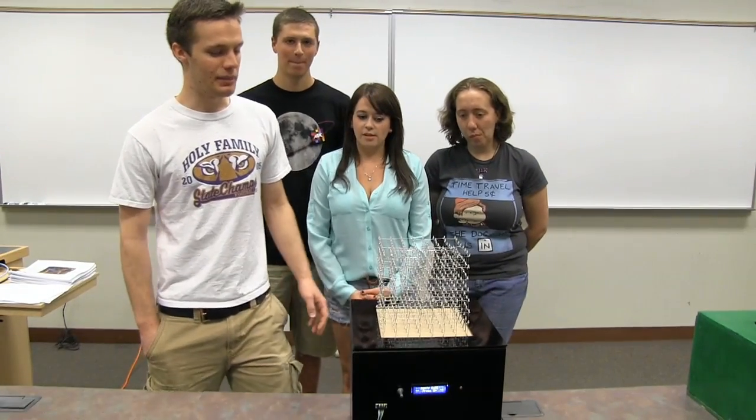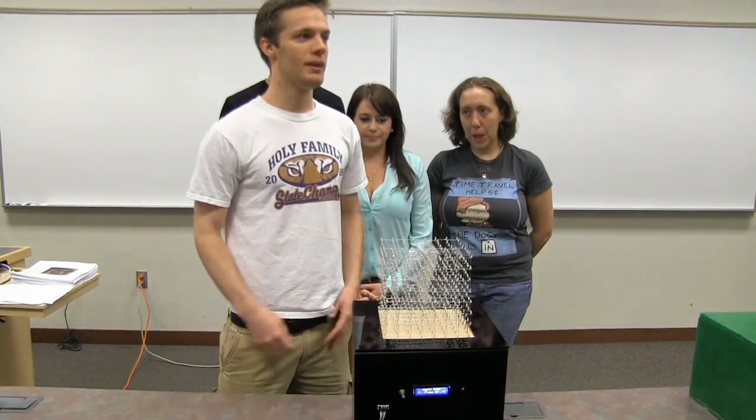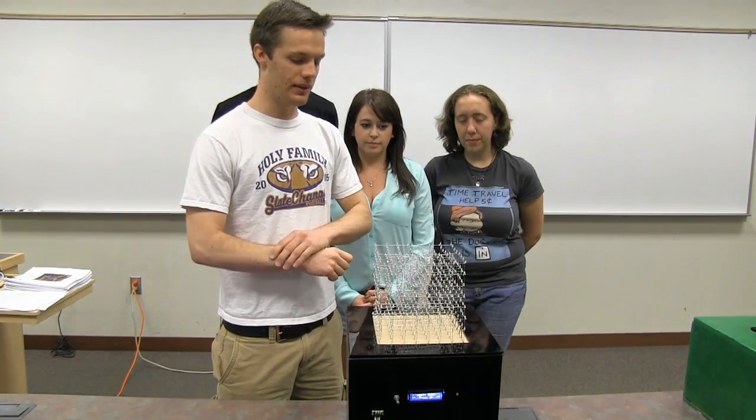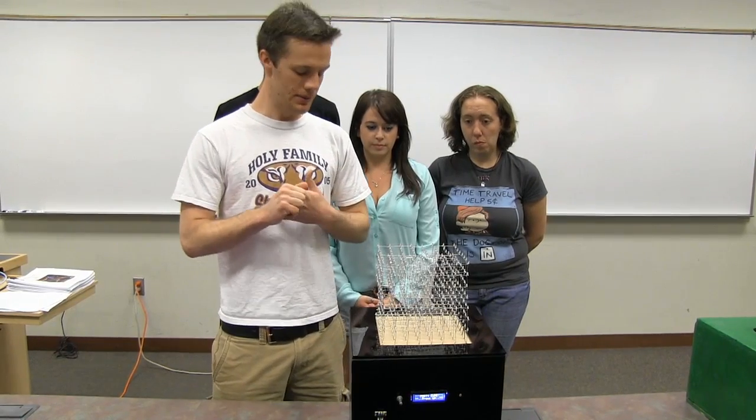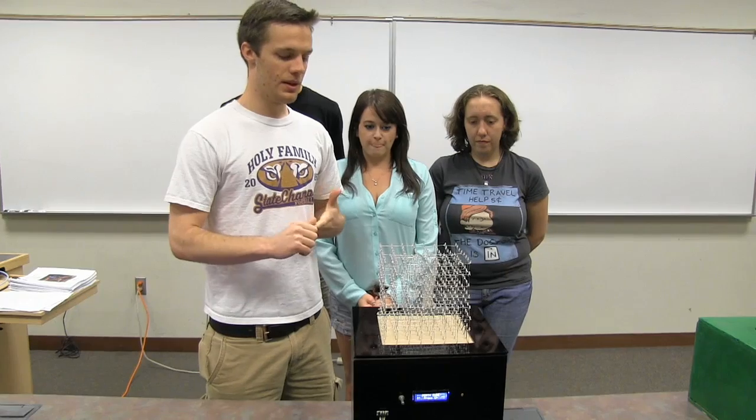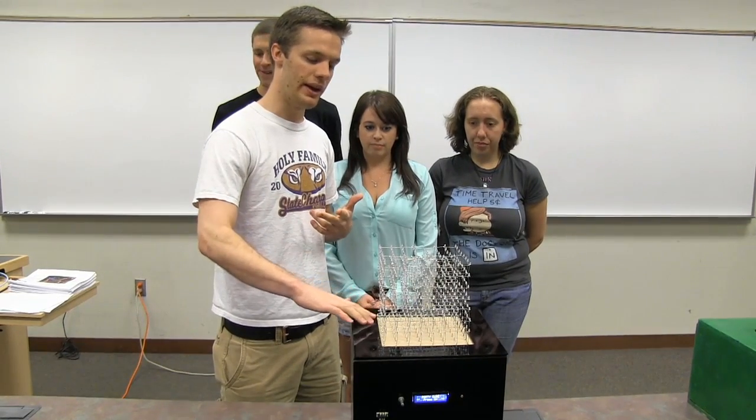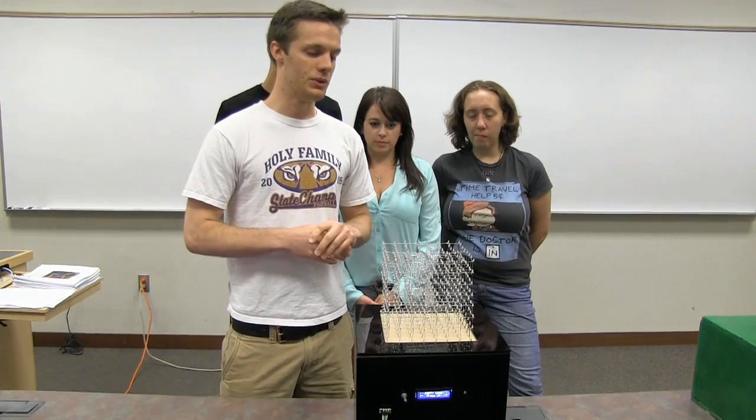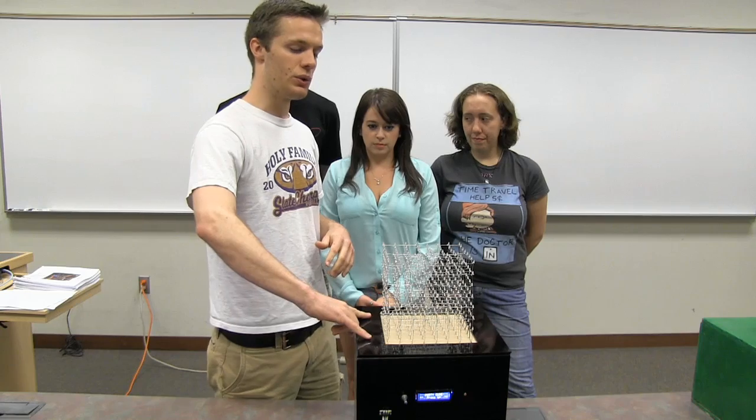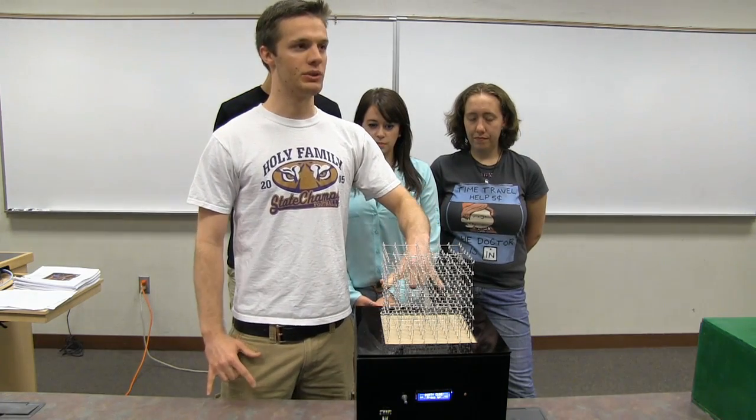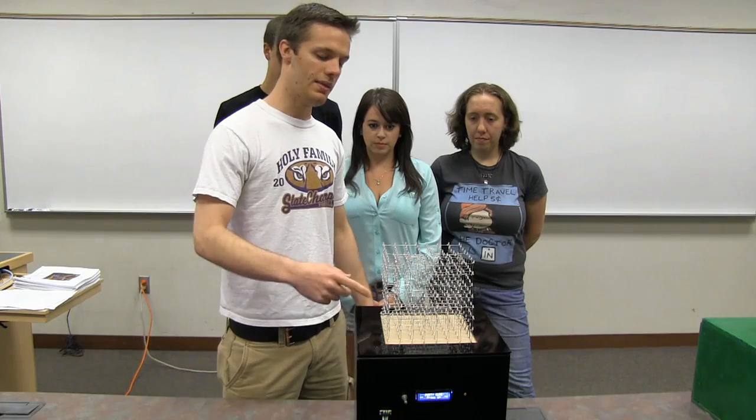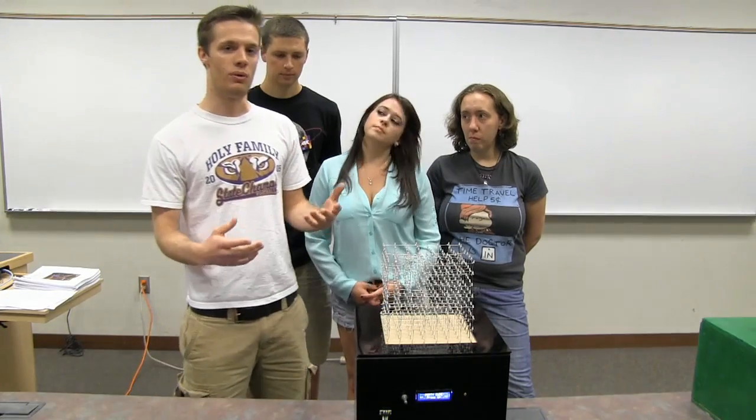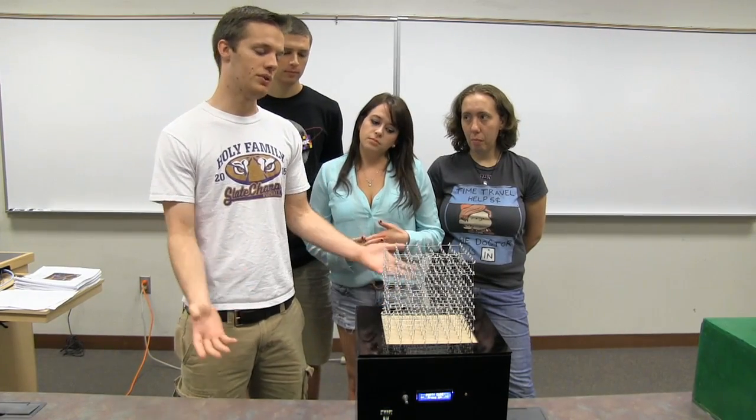All right, so this is our LED cube. Basically, it's 8 by 8 by 8, so that's 512 LEDs. The way we built it, we used 8 octal positive edge trigger data flip-flops. Each layer of the LEDs, the cathodes, are soldered together. So you have the data lines controlling the y-axis, the clocks on the flip-flops controlling the x-axis, and the cathodes controlling the z-axis. In that way, you can control all 512 LEDs with just 24 pins.